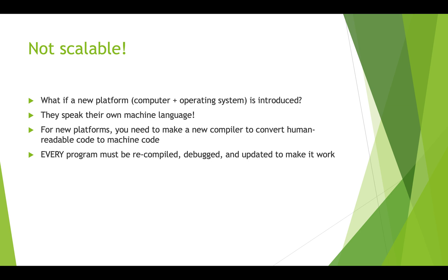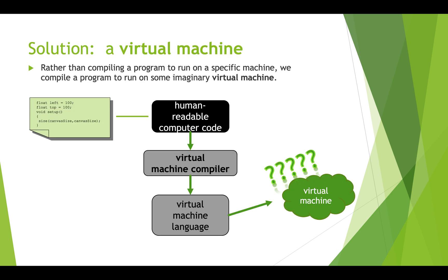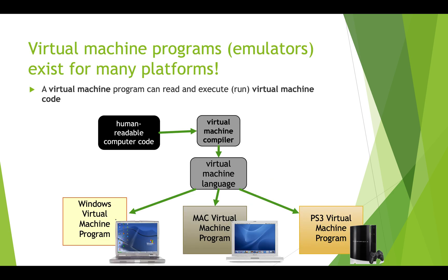So there must be a solution — and indeed there is. The solution is a virtual machine. The idea is we take programming code and send it through a virtual machine compiler to get a virtual machine language. It's a kind of machine language that can then run on different platforms, because every platform will have a virtual machine on it. The Windows PC has a virtual machine, so does the Mac, gaming systems, etc. So we compile once to this virtual machine language and then send it off to all these different platforms.